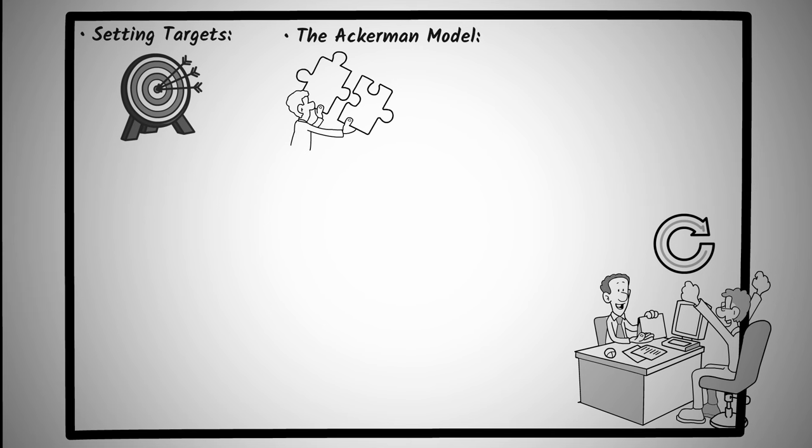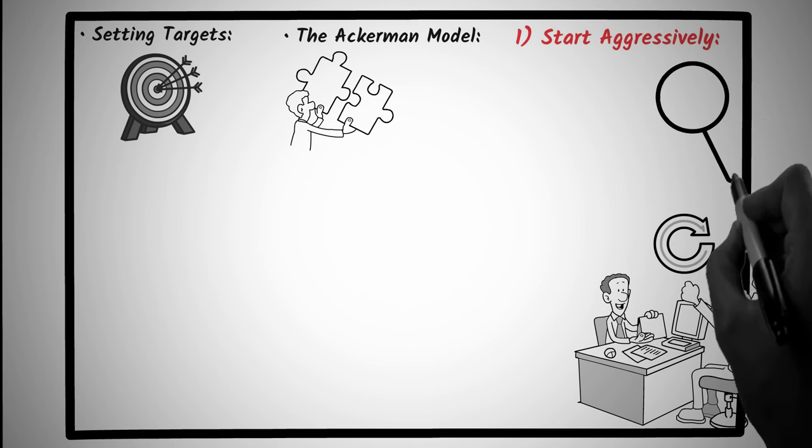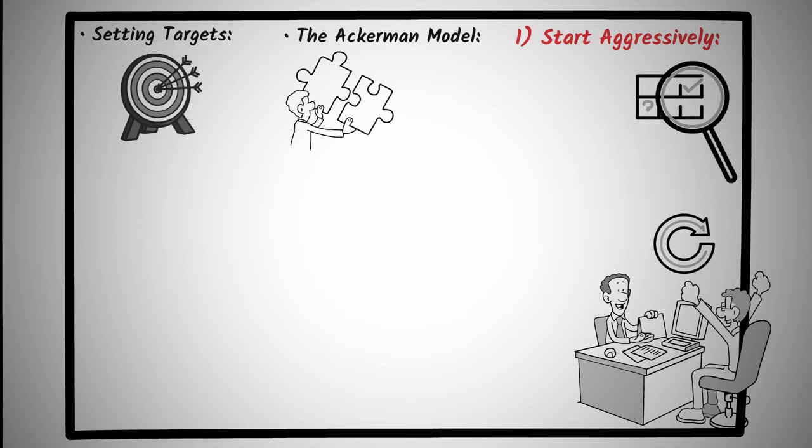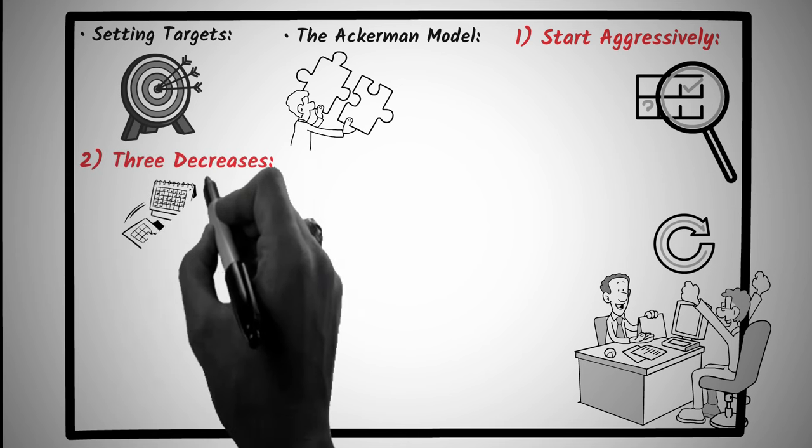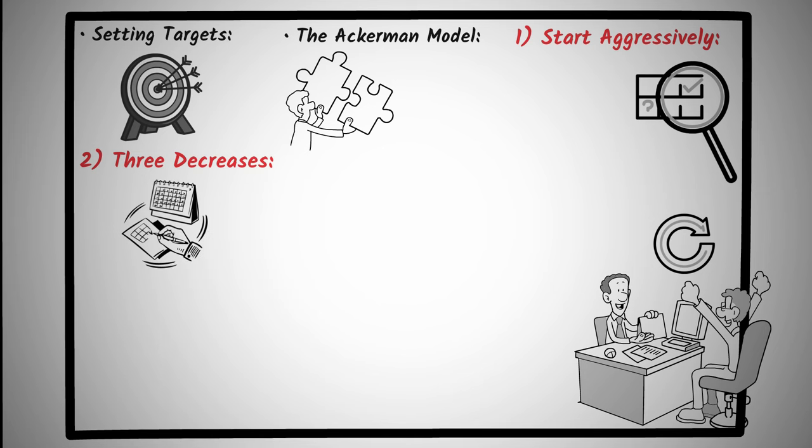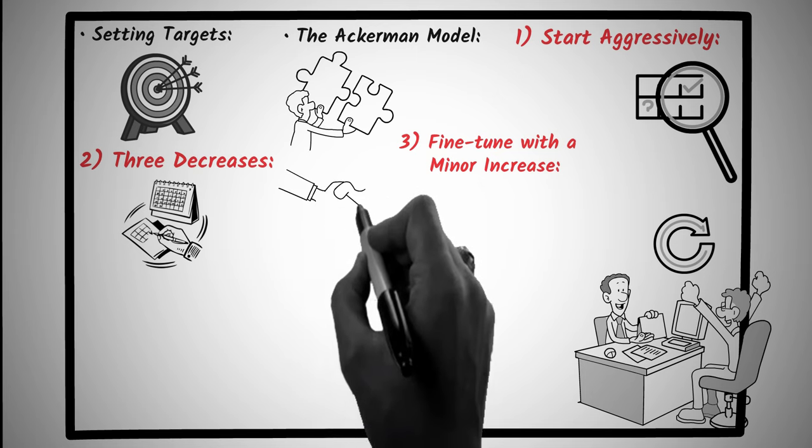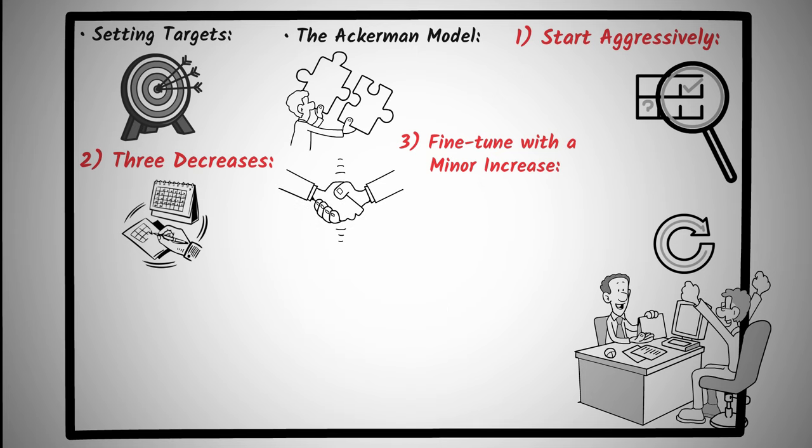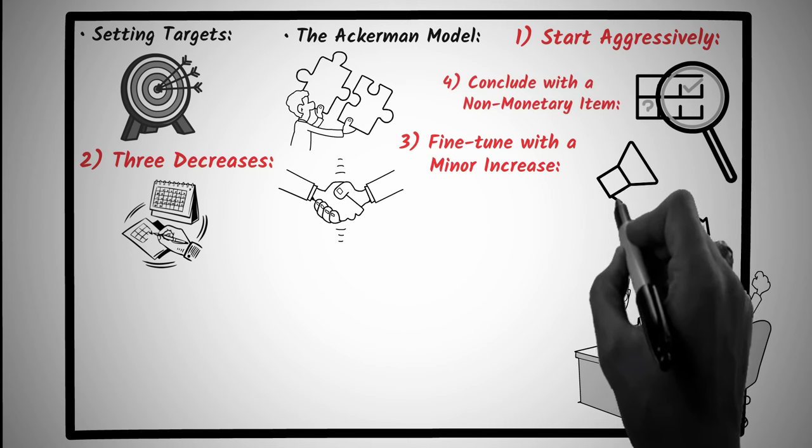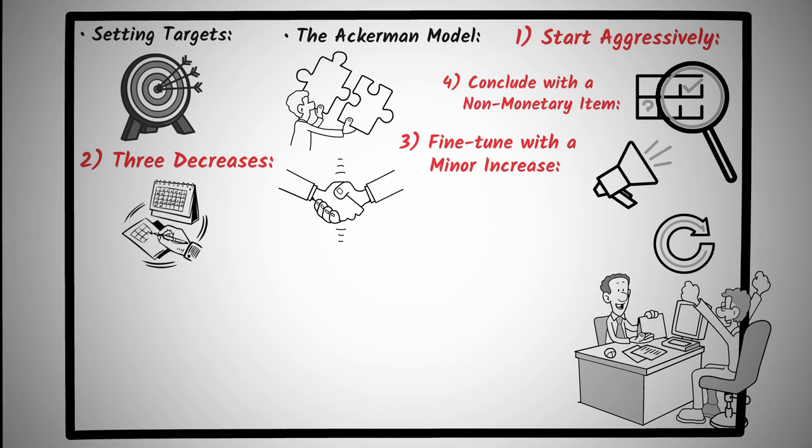One, start aggressively. Open with a lower or higher, depending on the situation. Initial offer than what you actually aim for. Two, three decreases. Use calculated steps to get closer to your target. First, decrease by half of the difference, then by 65%, and finally by 85% of the original difference. Three, fine tune with a minor increase. This makes the other party feel they've squeezed almost everything out of you. Four, conclude with a non-monetary item. Offering something extra, which doesn't significantly affect your bottom line, conceal the deal, and make the other party feel they've won.